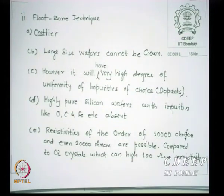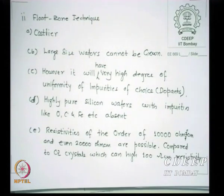Float Zone produces very highly pure silicon wafers — very low concentrations of both oxygen, carbon, iron, and other impurities. Very highly pure material is possible in Float Zone. ICs may not require that level of purity, but please remember most impurities act like either donors or acceptors in a semiconductor. If they are donors they will make it N-type; if they are acceptors they will make it P-type. All our effort in earlier processing is to dope a material to your choice, but if impurities are intrinsically present, it is difficult to control.